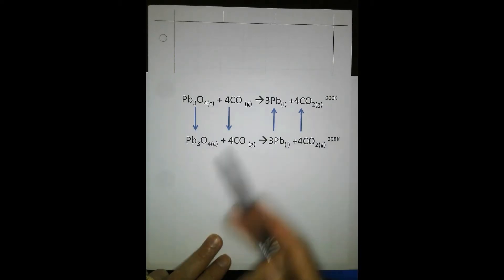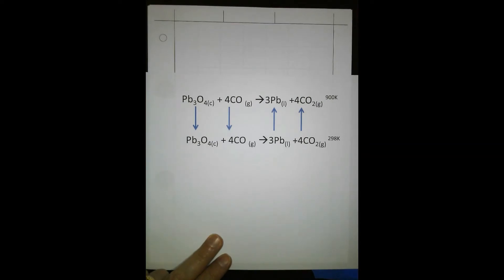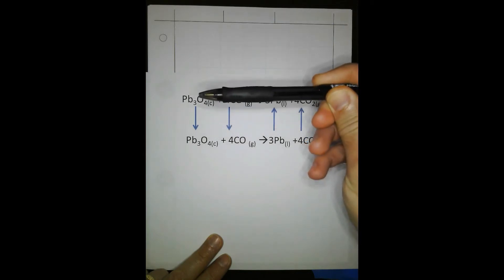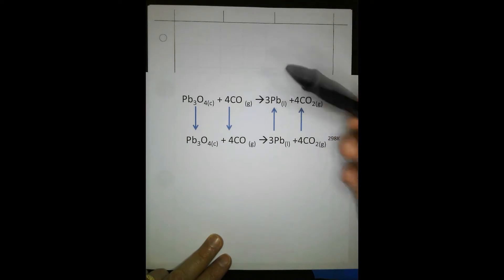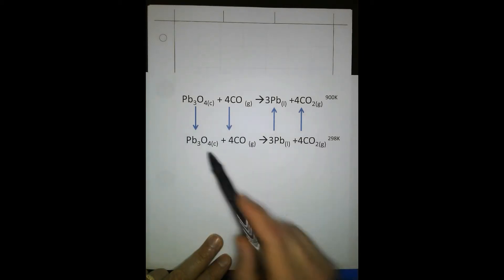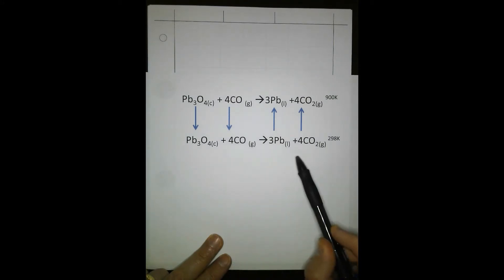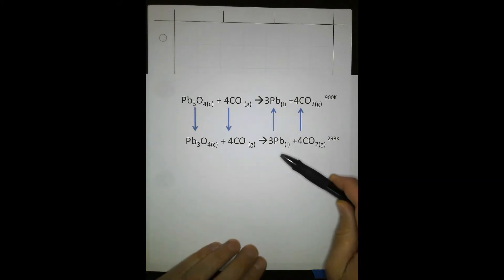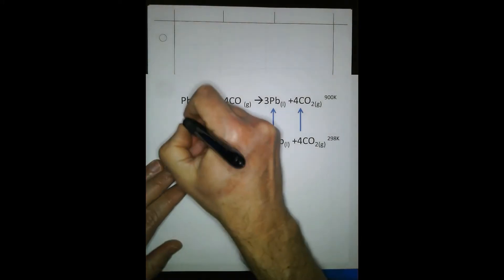One way to do it — you take the reactants from 900 degrees to 298 Kelvin and you have the enthalpy change, which is a sensible heat. You then calculate the heat of reaction at room temperature, 298 K. And then you take the products and use the sensible heat change, raising that from 298 K to 900 K.